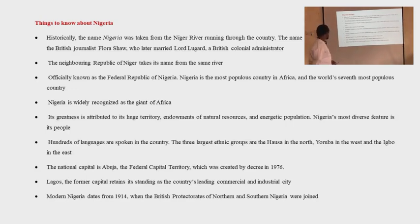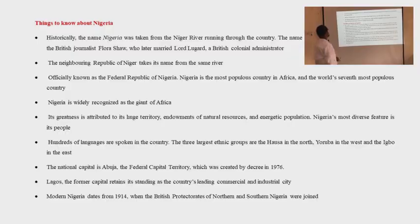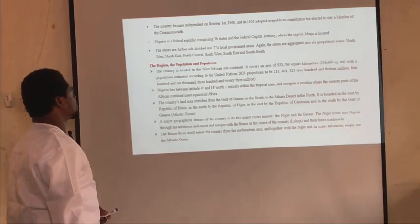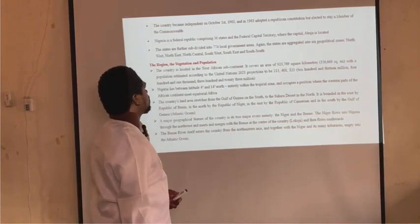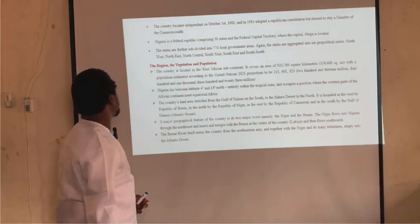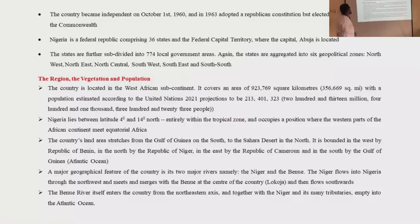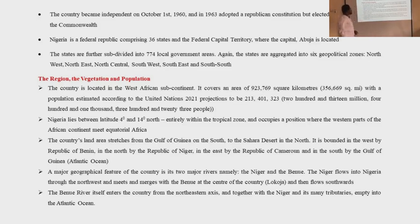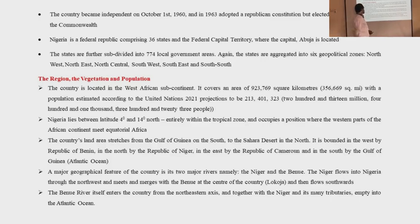Lagos, the former capital, retains its status as the country's leading commercial and industrial city. Modern Nigeria dates from 1914, when the British protectorates of northern and southern Nigeria were joined. The country became independent on October 1st, 1960, and in 1963 adopted a Republican constitution but elected to stay a member of the Commonwealth. Nigeria is a Federal Republic comprising 36 states and the Federal Capital Territory. The states are subdivided into 774 local government areas and aggregated into six geopolitical zones: Northwest, Northeast, North Central, Southwest, Southeast, and South South.